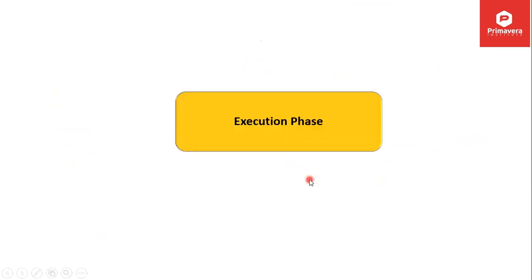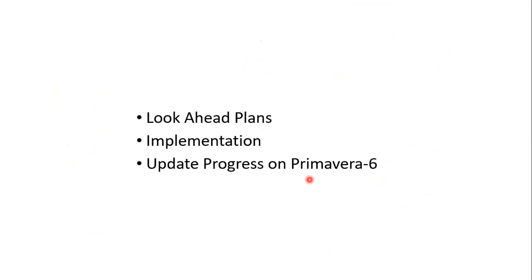In the execution phase, you prepare look-ahead plans. Once you have your project schedule, S-curves, histograms, and tracking method, you are in the implementation phase. On a weekly or daily basis, you prepare Primavera 6-based look-ahead plans, hand them over to the implementation team, and get back the data. Site engineers, shutdown engineers, and supervisors update Primavera 6 with work done. You update your Primavera 6 reporting based on site work.